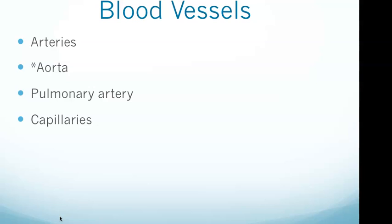Smaller arteries called arterioles supply blood to the capillaries, which facilitate the exchange of oxygen and carbon dioxide. The capillaries are minute blood vessels forming networks throughout bodily tissues. It is through the capillaries that oxygen, nutrients, and wastes are exchanged between the blood and the tissues. Capillary networks are the ultimate destination of arterial blood and the starting point for blood flow back to the heart.